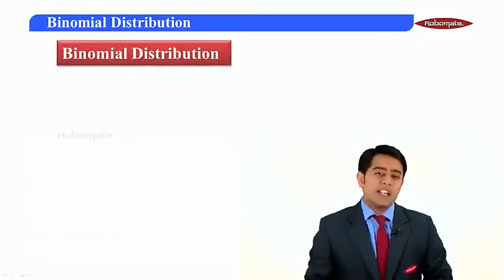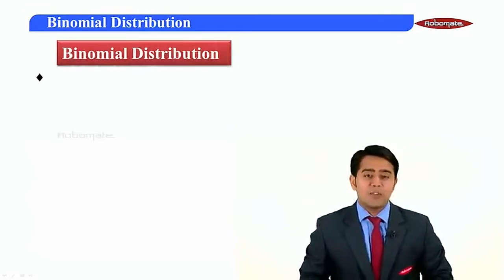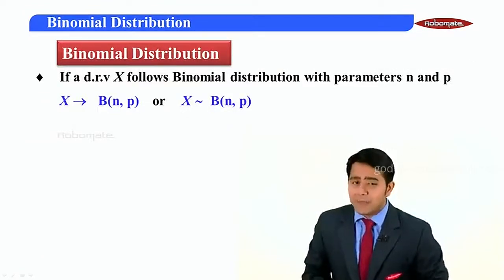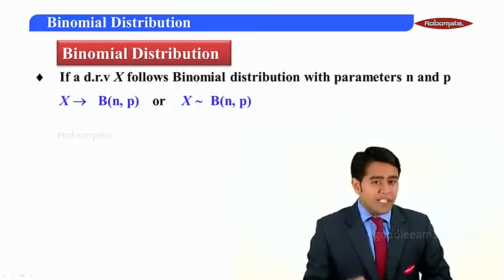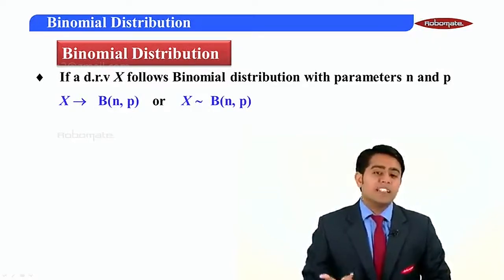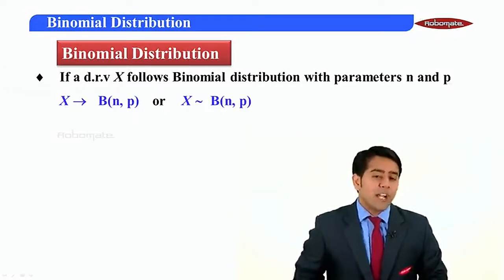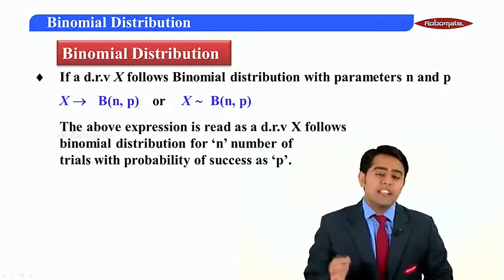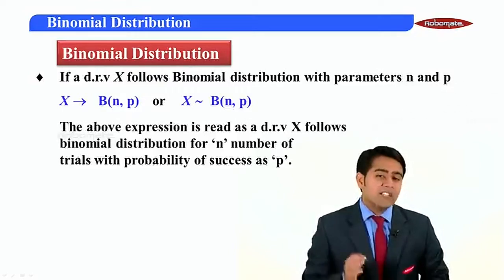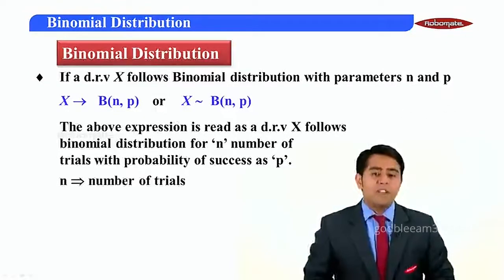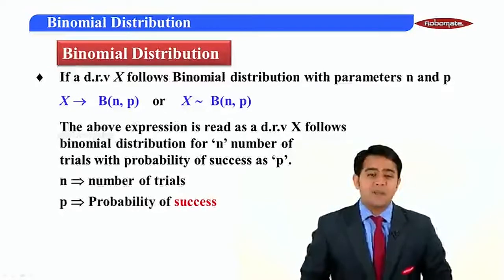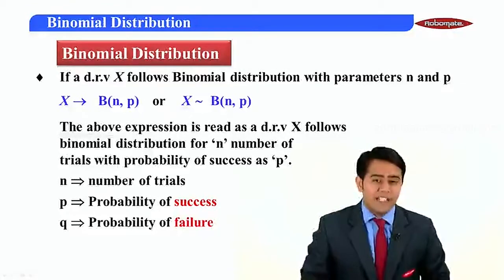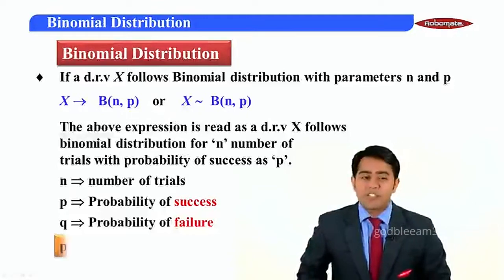Moving further, we have binomial distribution. If a discrete random variable X follows binomial distribution with parameters n and p, we denote it as: X follows binomial distribution for n number of trials with probability of success p. Here, n is the number of trials, p is the probability of success, and q is the probability of failure.